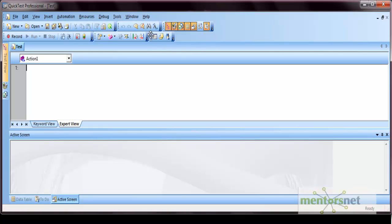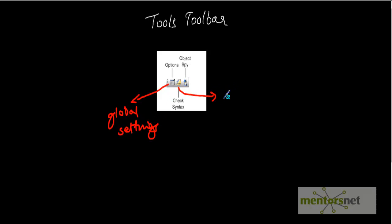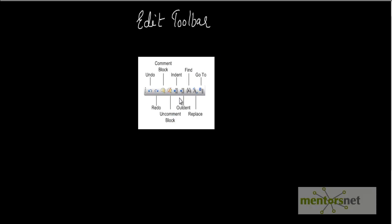The next is the tools toolbar, which has three options. The first is Options, from where you can do global settings of your test. The second is Check Syntax, useful for checking syntax errors in your code. The third is Object Spy — an icon of a man with a hat — which is a spy tool by which you can spy the properties of objects of the application. We will see this option when we discuss object repositories and object identification.